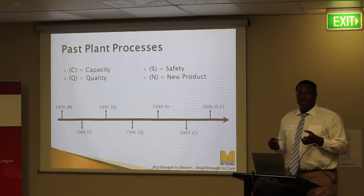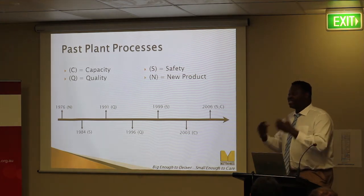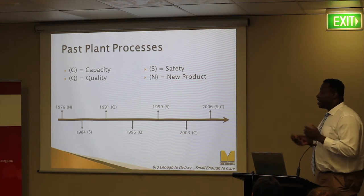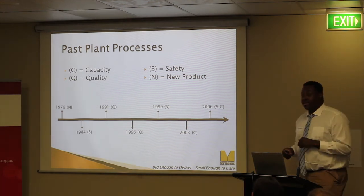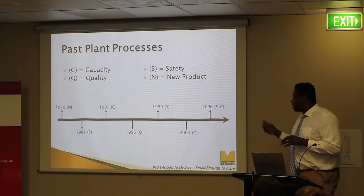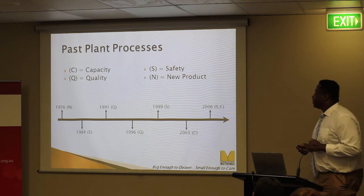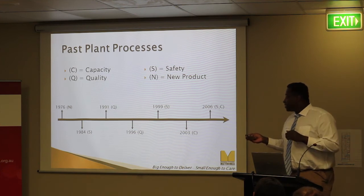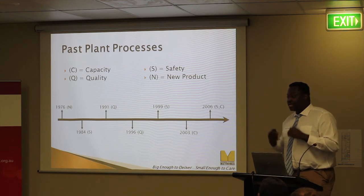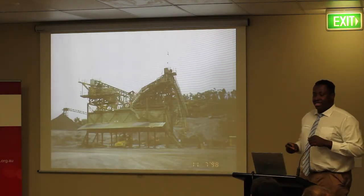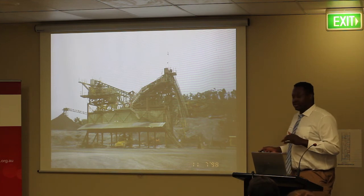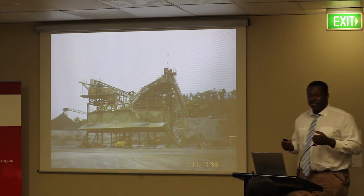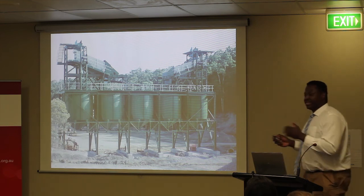The safety upgrade category relates to components in the processing plant exceeding their useful economic life or becoming unsafe. Looking at 1999 specifically, this is a picture of the old product bins dated 1998 — they look quite old and unsafe. So we had to optimize these bins, and this is the end result. You can see there's a big difference.